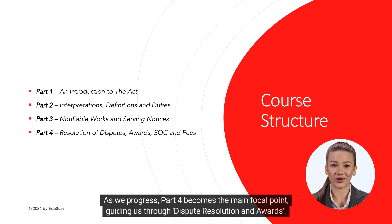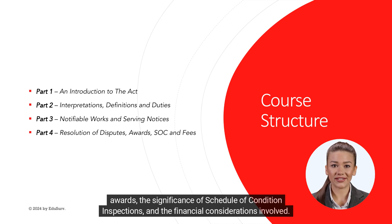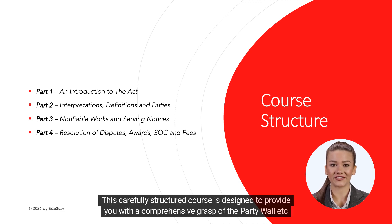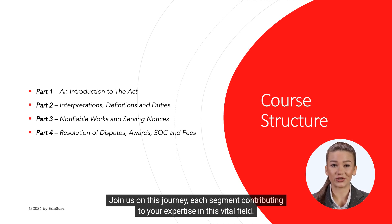As we progress, Part 4 becomes the main focal point, guiding us through dispute resolution and awards. Delve into the mechanisms for amicably resolving conflicts between parties, the process of creating awards, the significance of schedule of condition inspections and the financial considerations involved. This carefully structured course is designed to provide you with a comprehensive grasp of the Party Wall Etc. Act 1996, from its origins to practical implementation. Join us on this journey, each segment contributing to your expertise in this vital field.